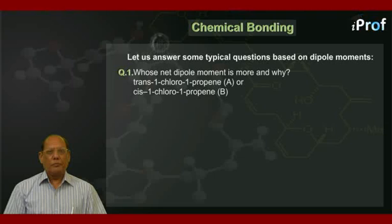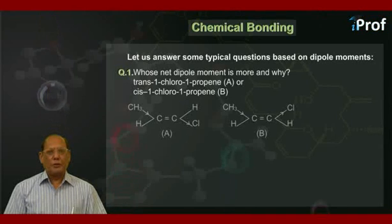The compounds are trans-1-chloro-1-propene, that is A, and Cis-1-chloro-1-propene, that is B. The structures are given here.